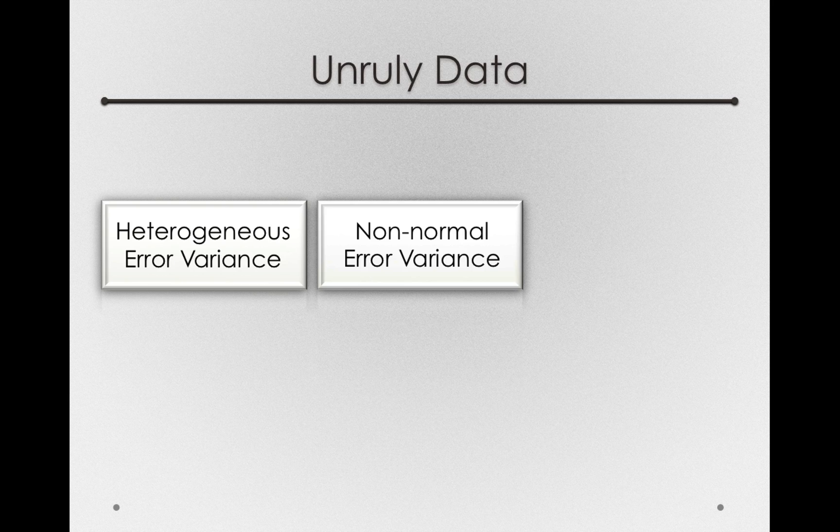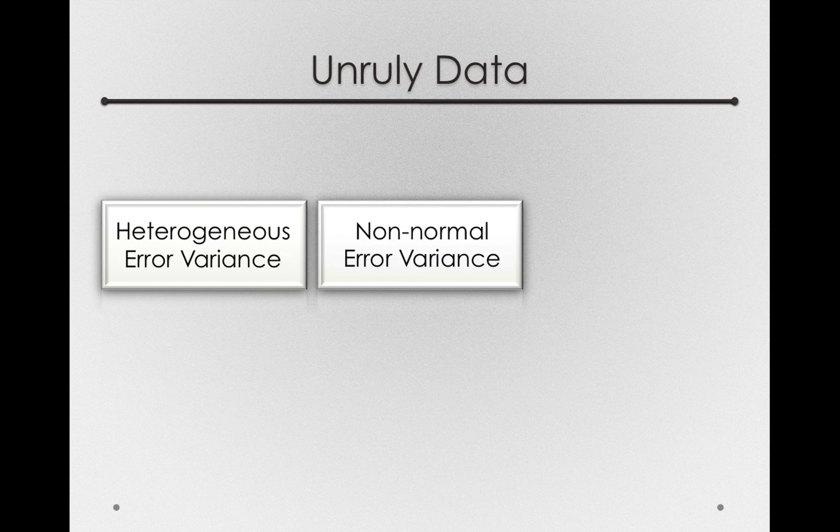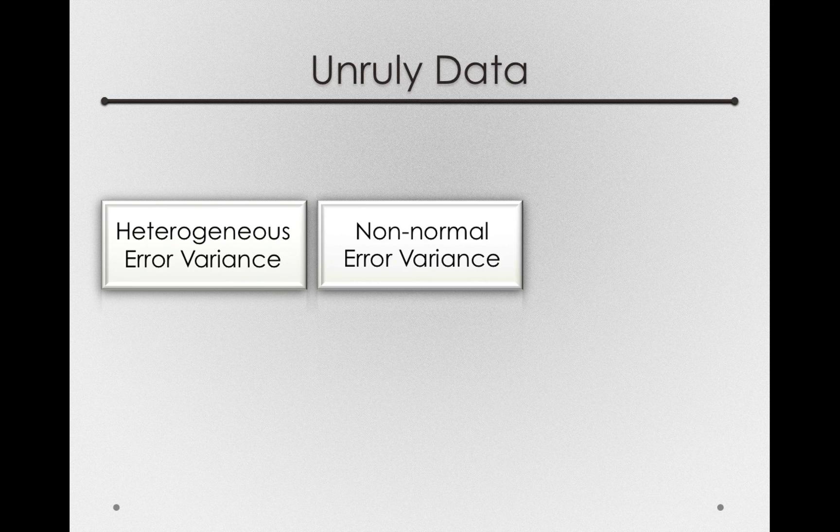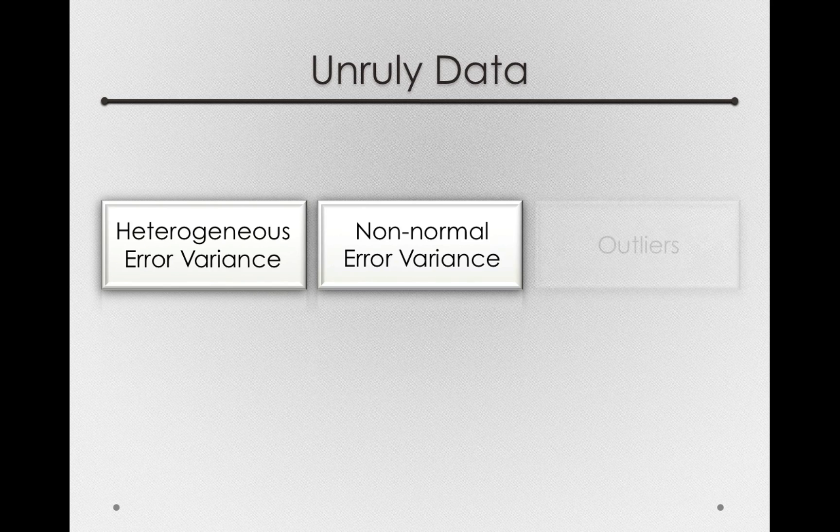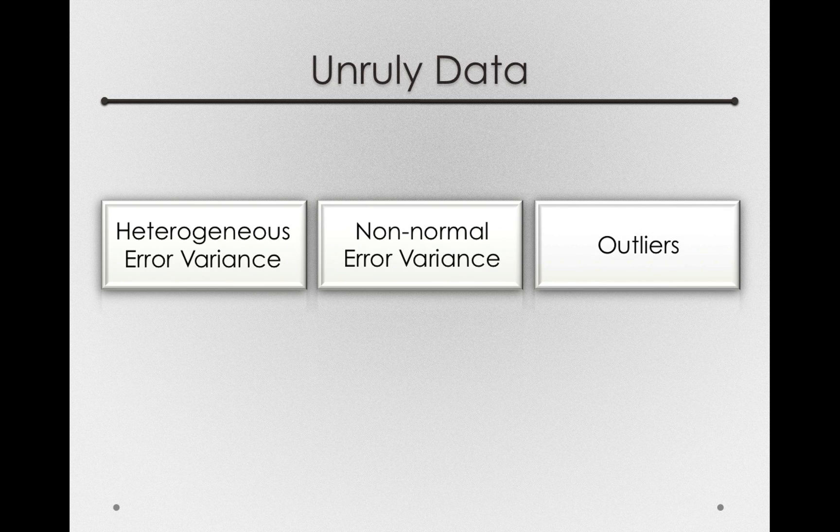Another problem could be non-normal error variance. For the same reasons that we had to deal with normality when performing t-tests or z-tests, we do assume that the population variables are normally distributed. Finally, another way data can be unruly is being contaminated with outliers. This is a slightly different problem and one we'll address separately.